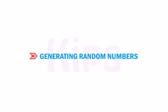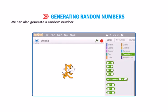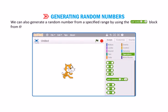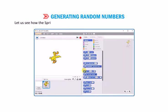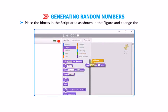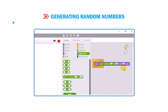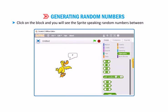Let us learn how to generate random numbers. We can also generate a random number from a specified range by using the block from the operator's block category. Let us see how the sprite itself chooses random numbers with the help of this block. Place the blocks in the script area as shown in the figures and change the values. Click on the block and you will see the sprite generating random numbers between 1 to 50.